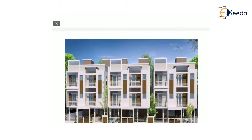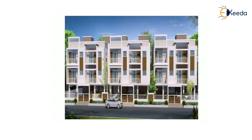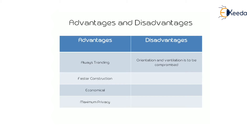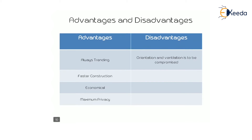This is the simple picture of row houses — you can see all the structures look similar, which is why they are called row houses. Advantages: always trending, faster in construction as all structures and plans are the same, economical, and maximum privacy. Disadvantage: orientation and ventilation are compromised because row houses are connected with each other and sometimes share the same wall.